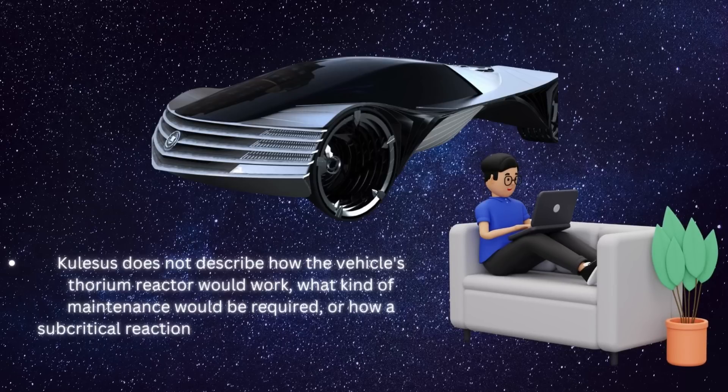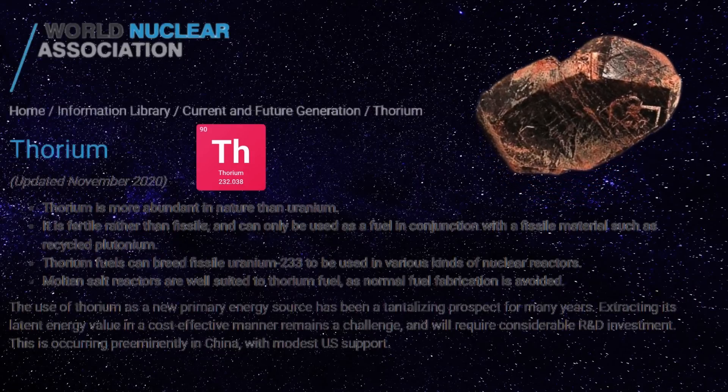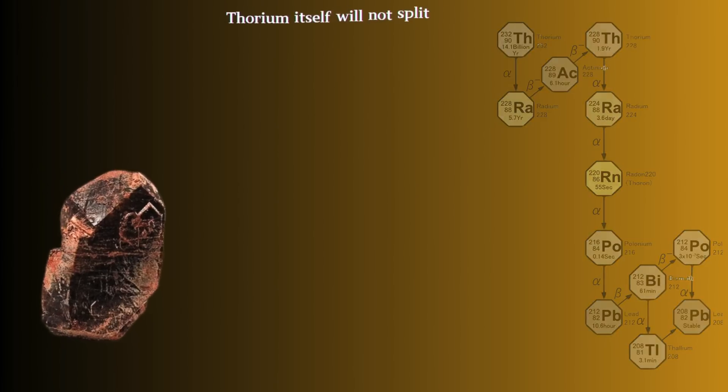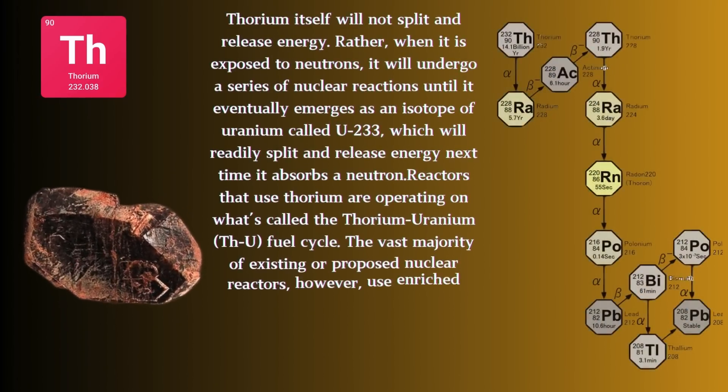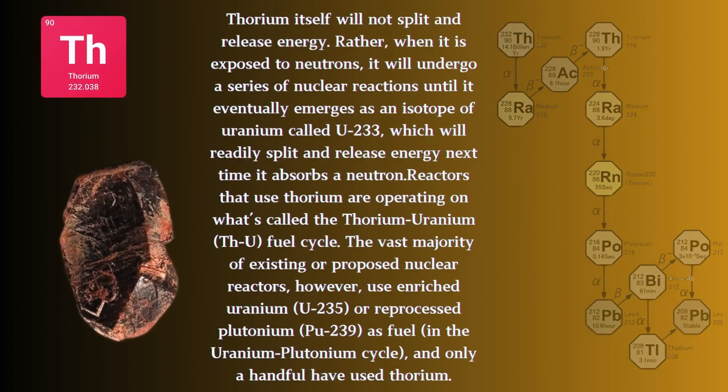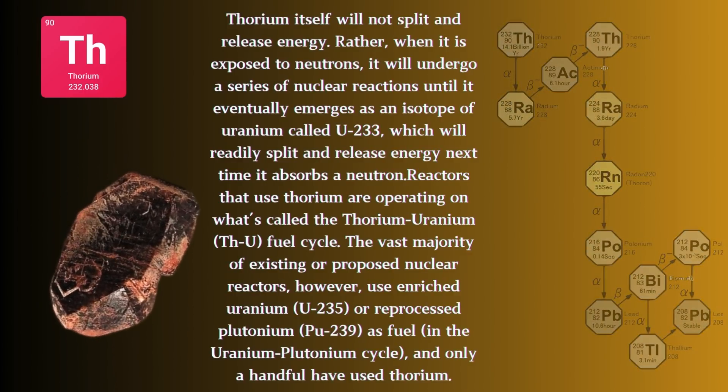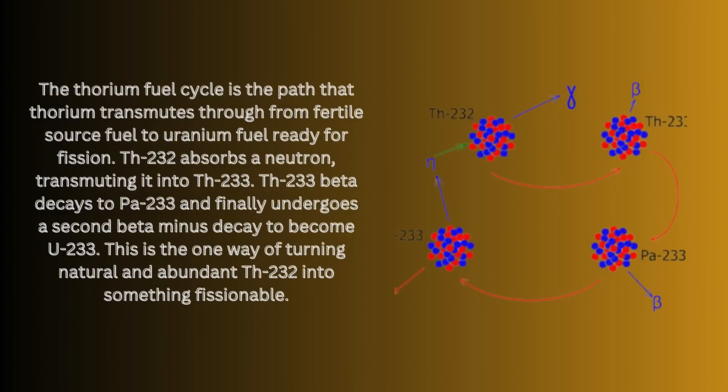Another issue with the Cadillac World Thorium concept is that thorium is not a particularly practical fuel for a small nuclear reactor. While thorium is more abundant than uranium and plutonium, it is not fissile, meaning it cannot sustain a nuclear chain reaction. Instead, thorium would need to be converted into fissile material such as uranium-233 to be used as fuel. This process is technically challenging and has not yet been demonstrated on a large scale.